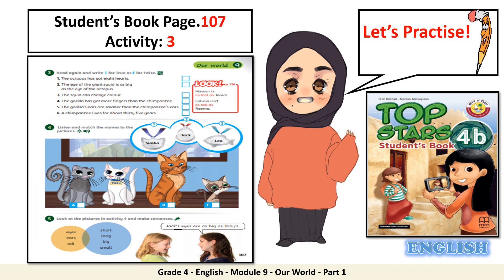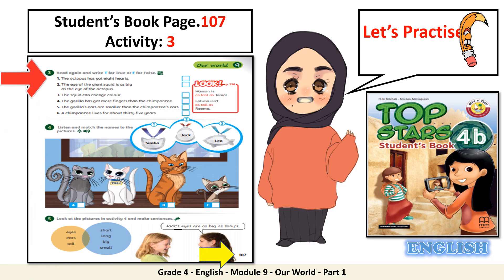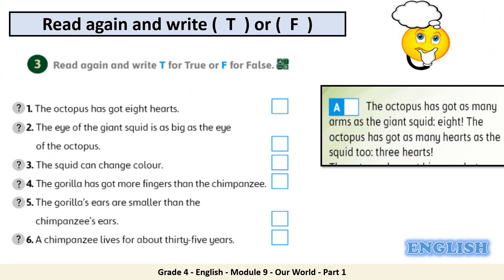Now let's practice. Turn to your student's book, page 107, activity number 3. Read again and write T or F — T for true or F for false. Let me start by doing the first one as a model. The octopus has got eight hearts. Let's find it in the text. The octopus has got as many hearts as the squid — three hearts. So the answer is F. Now pause the video and do the rest by yourself.